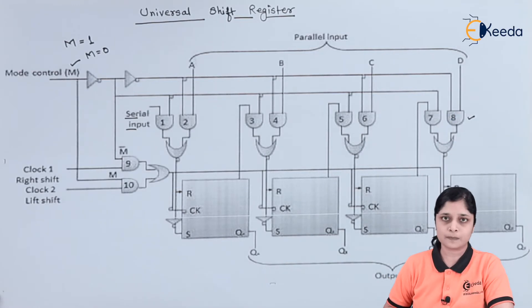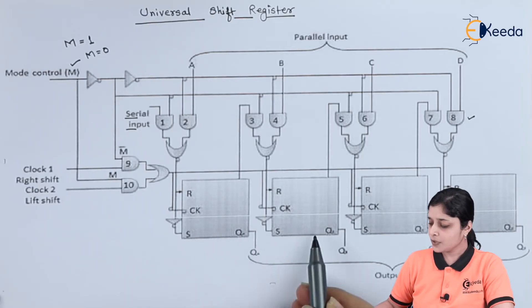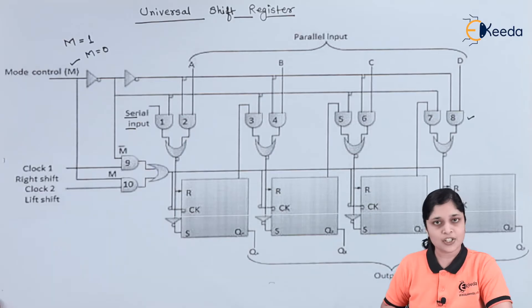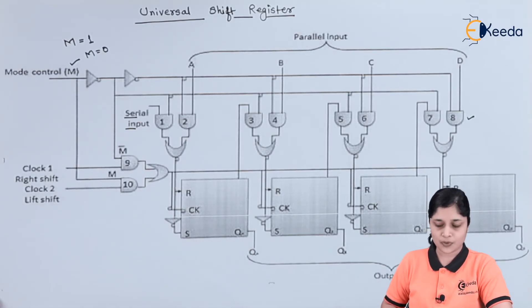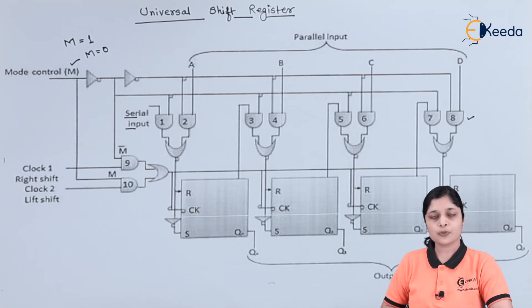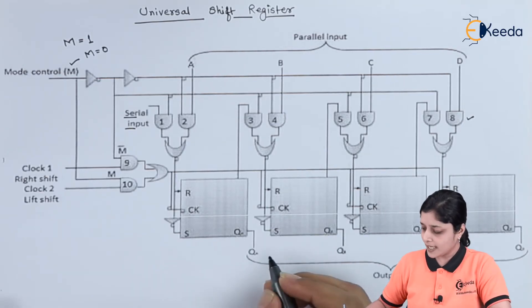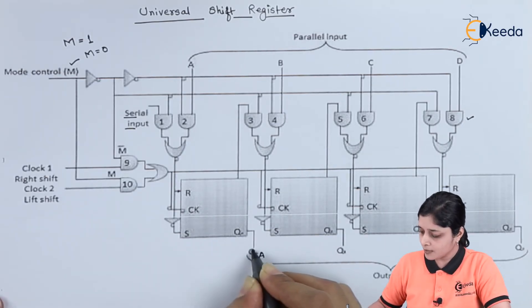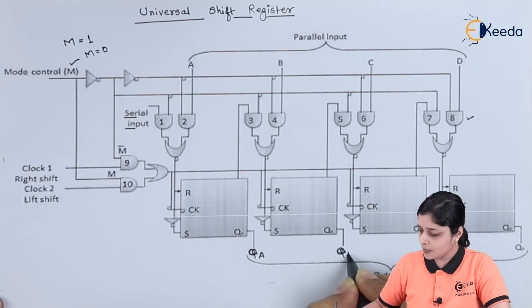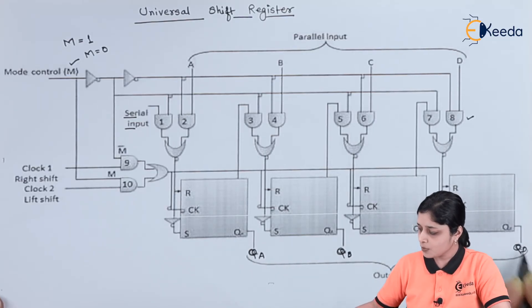These are the flip-flops. Clock is synchronous, one is the clock one for right shift and this is the clock two for the left shift. According to this flip-flops you are getting the final outputs, QA, QB, QC, and QD.